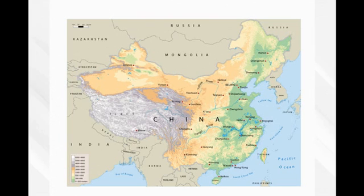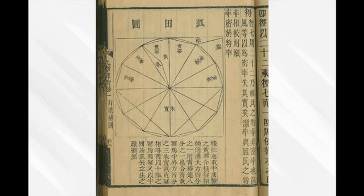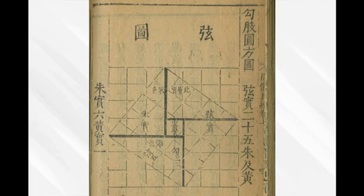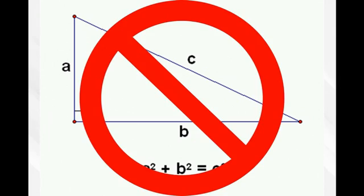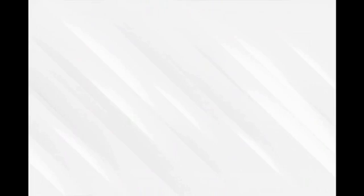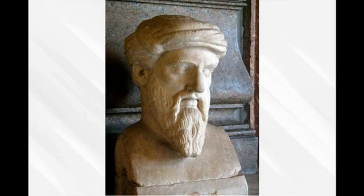Around the same time in China, there was a book written called Nine Chapters and the Mathematical Procedures. In it, many problems are presented, and one which demonstrates the solution for the Pythagorean theorem. Past this, the Pythagorean theorem has not changed in hundreds of years, and it remains under the name of Pythagoras to the current day.